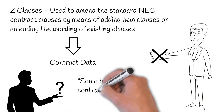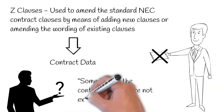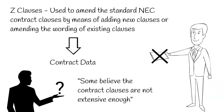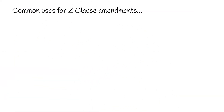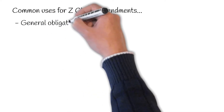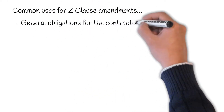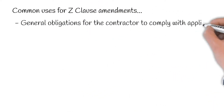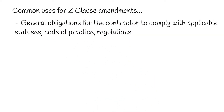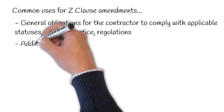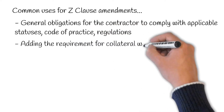Some believe the NEC provisions are not as extensive as they need to be. The following are the common uses for Z clause amendments. 1. General obligations of the contractor to comply with the applicable statutes, codes of practice, regulations and so on. 2. Add in the requirement for collateral warranties.